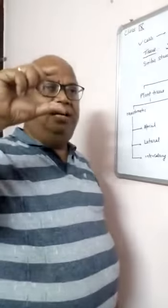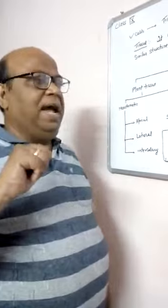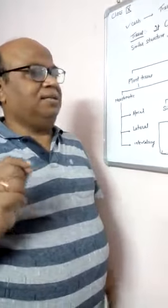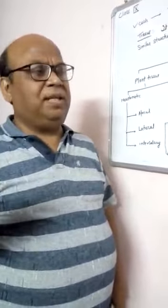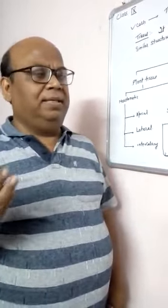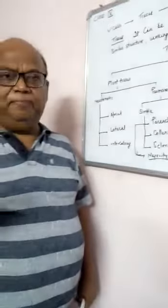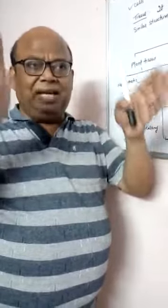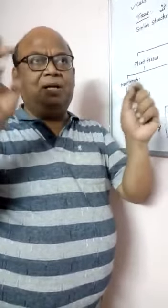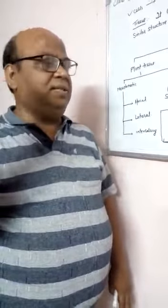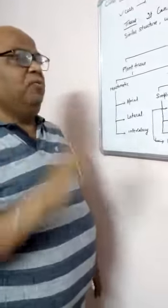Colenchyma cells are elongated — slightly longer in size — and their cell walls are thick. The cell walls of colenchyma consist of pectin and cellulose. Colenchyma is generally found under the epidermis. The epidermis is the outermost part of the stem or any part of the plant, and colenchyma is found just below that epidermis.